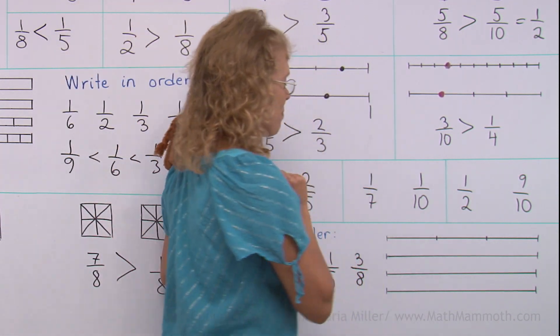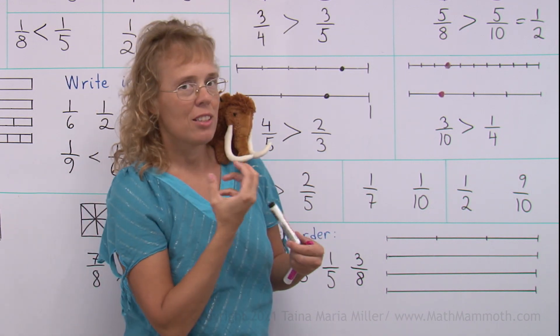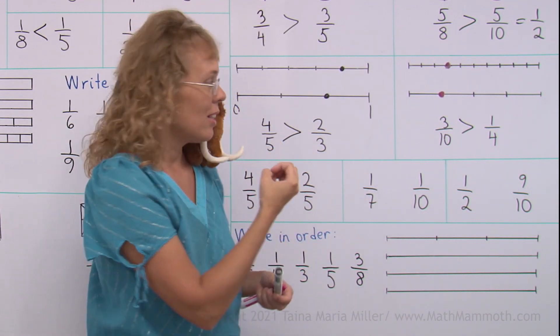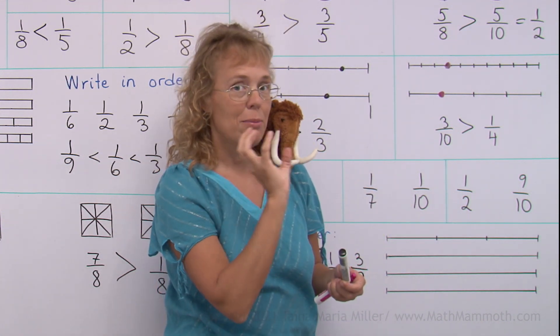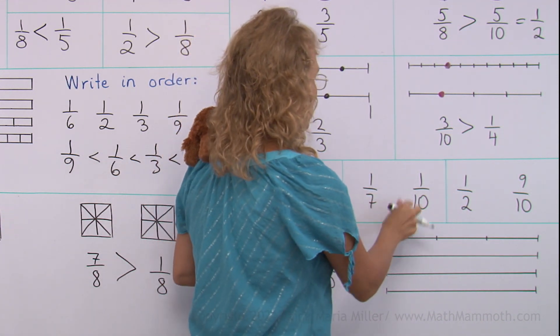One-seventh and one-tenth. There are different kinds of pieces, but there's just one piece. One-seventh, one-tenth. You remember if you divide your pie into 10 pieces or 7 pieces, these are smaller pieces.